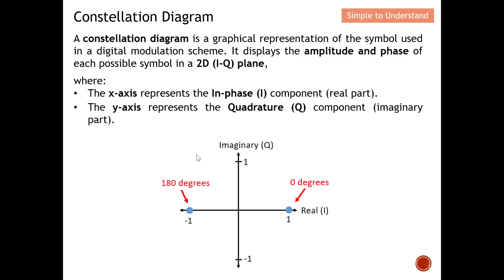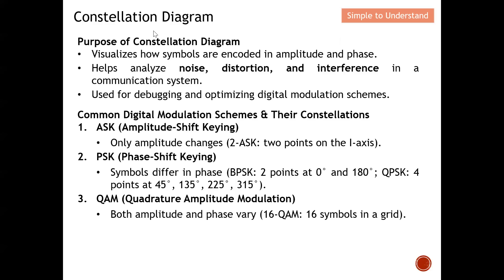This diagram shows a simple constellation diagram. The x-axis represents the in-phase component, which is the real part. The y-axis represents the quadrature component, which is the imaginary part. I will come back to this on the next few slides.